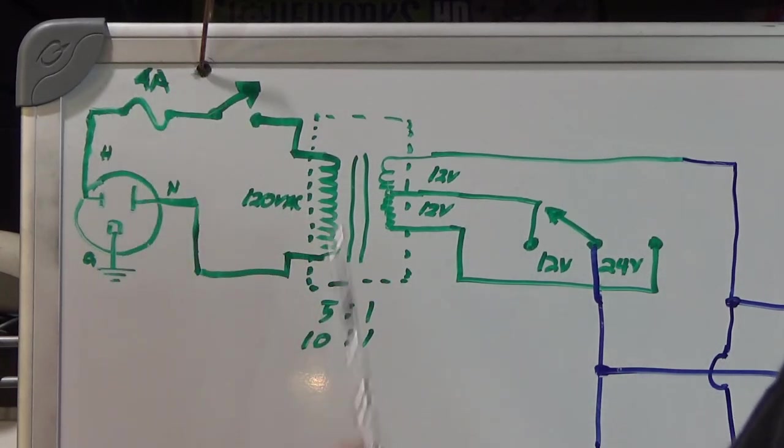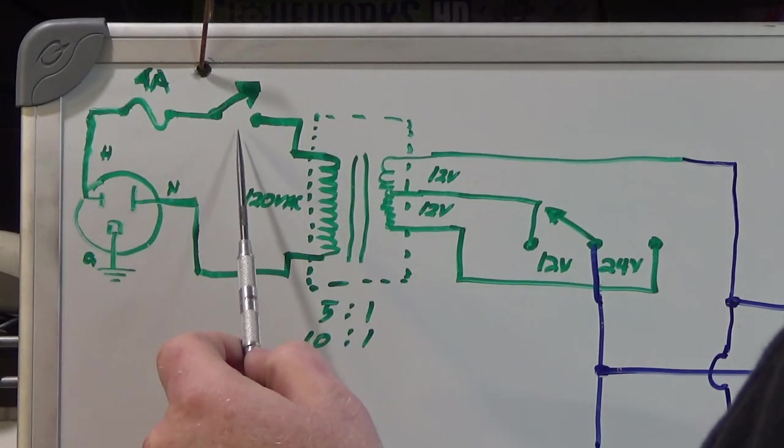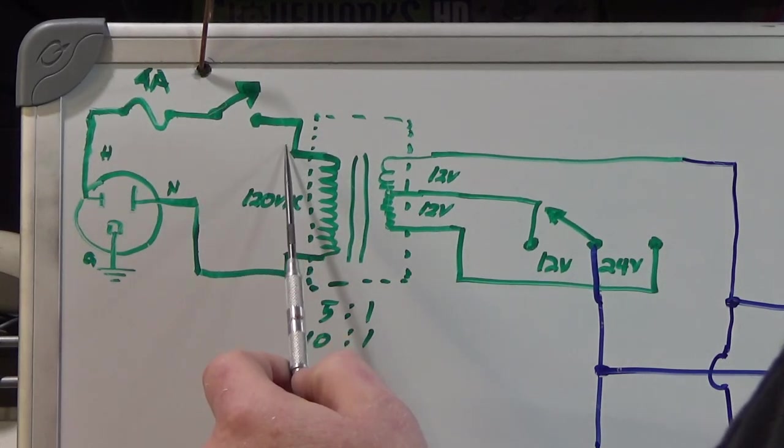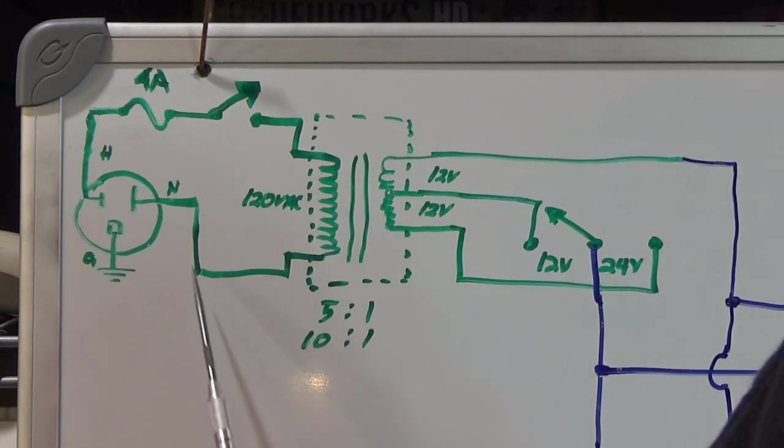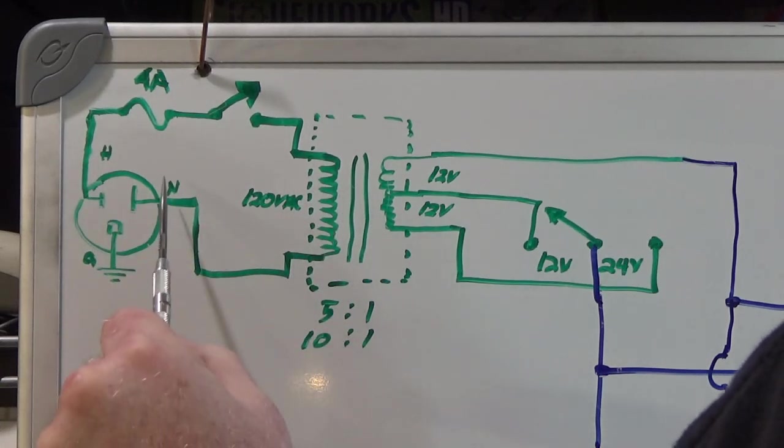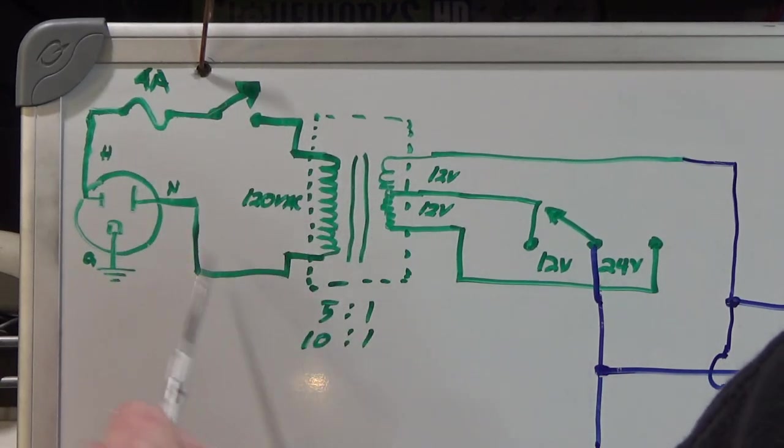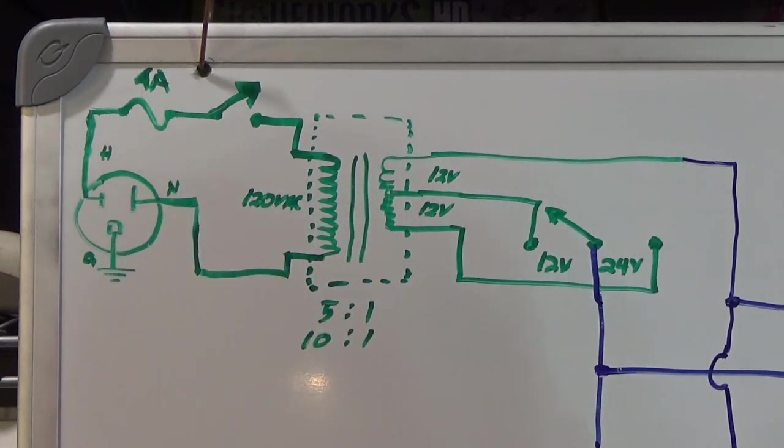Next in line is a switch, which is an on-off for the entire box. Then it goes from there to the top of the transformer and out the bottom of the transformer back to the neutral. So the current flows like this. In reality, it's AC, so it flows like this, then it flows like this, and it flows like this, and it flows like this.